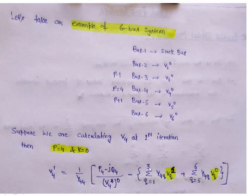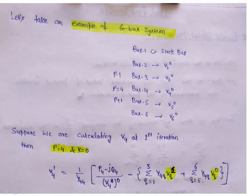Minus the summation q equal to 1 to 3 of y4q * vq at iteration 1 — meaning we are at the first iteration and the voltage values of buses 1 to 3 should be of the first iteration. Plus summation q equal to 5 to 6 of y4q * vq at iteration 0, meaning these values will be the initial values. We have already calculated v1, v2 and v3 for the first iteration. Basically, there is no need to calculate voltage at the first bus because it is the slack bus and its voltage is already specified. So v1, v2, v3 are used as updated values while v5 and v6 are used as non-updated values.